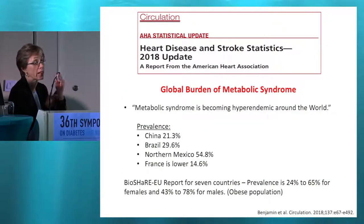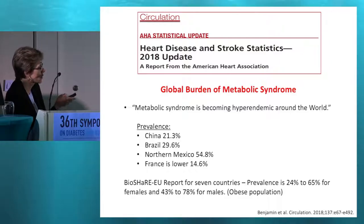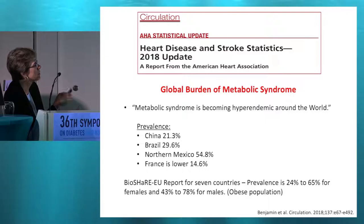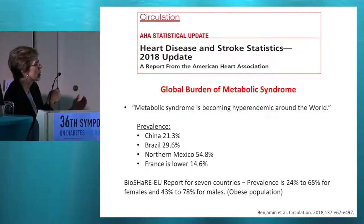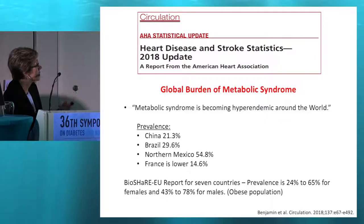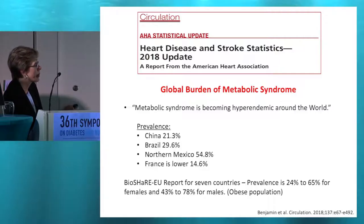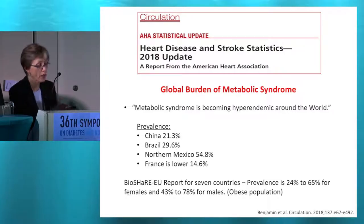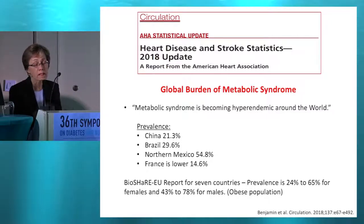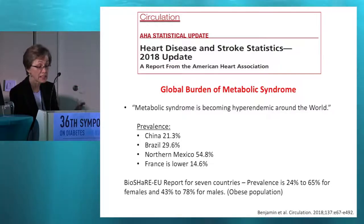Recently, the American Heart Association Heart and Stroke Statistics were published, and they covered the topic of metabolic syndrome. According to Amelia Benjamin, metabolic syndrome is becoming a hyperendemic problem around the world. In the BioShare report for seven countries, among the obese population, the prevalence is between 24 to 65% for females and 43 to 78% for males — portending a very risky future.